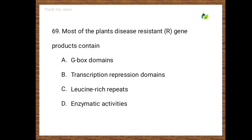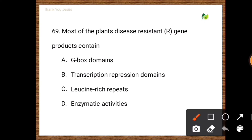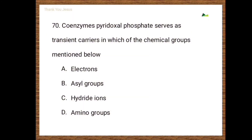Next question: Most plant disease-resistant gene products contain — options are G-box domains, transcription repression domains, leucine-rich repeats, enzymatic activities. The correct option is leucine-rich repeats.